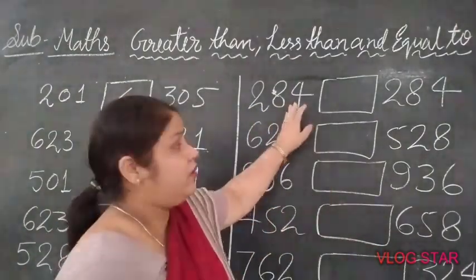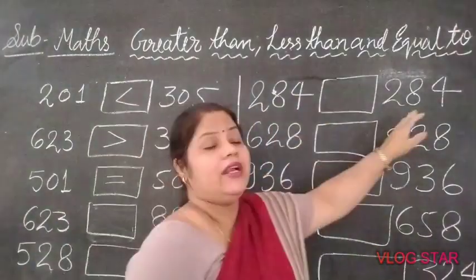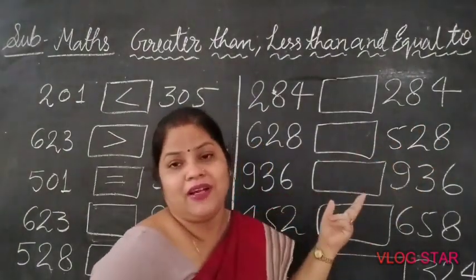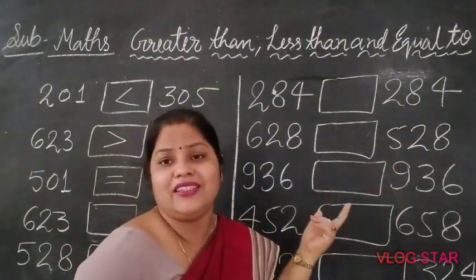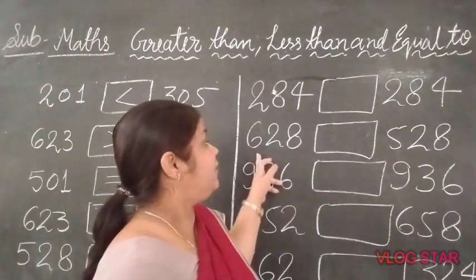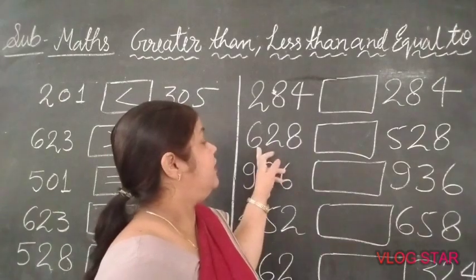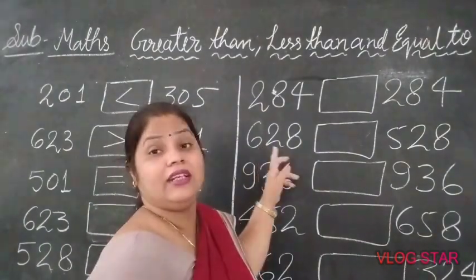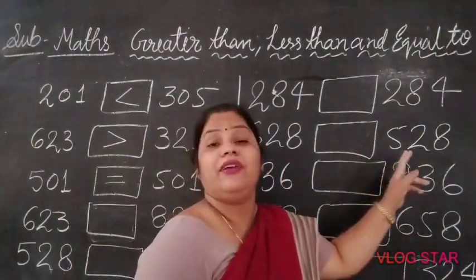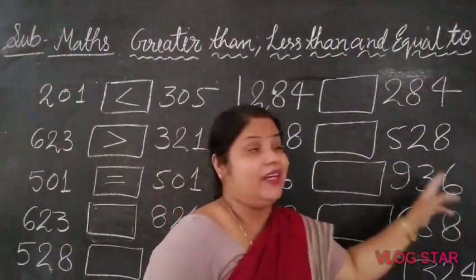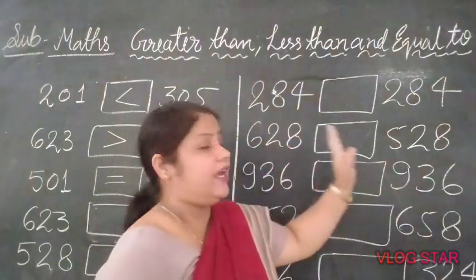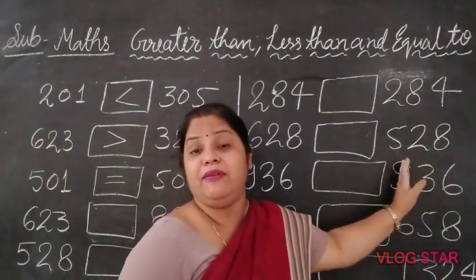284 and 284 — it is very easy. 628 and 528 — the hundreds digit: 6 versus 5, so 6 is greater.